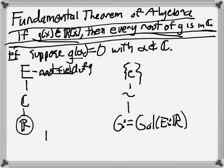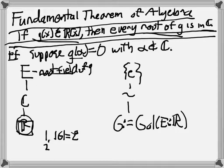First of all, we're going to prove that the order of G is equal to 2^a for some a. And the way we're going to do this is we're going to use Sylow theory. We're going to look at a Sylow 2-subgroup, and we're going to look at its fixed field. And we're going to show that the fixed field is equal to R. And that will be enough to prove that the Galois group has 2-power order. And from there we can do a little bit more.